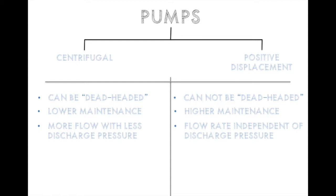On centrifugal pumps there's more flow with less discharge pressure, whereas on the PD side, the flow rate is independent of the discharge pressure. The flow rate is dependent only upon how many revolutions of the internal parts.